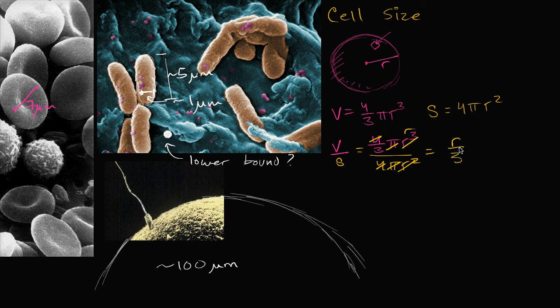Now luckily this simplifies quite nicely. Four divided by four is one, pi divided by pi is one, r to the third divided by r squared is just going to be r. So this all simplified very nicely to r over three. And if we wanted to care about units, it would be cubic units divided by square units.